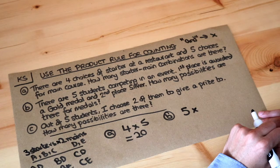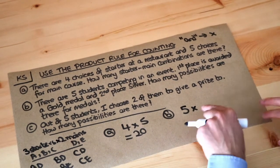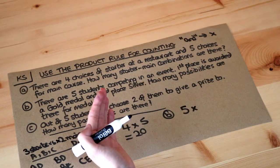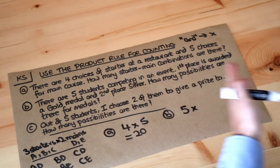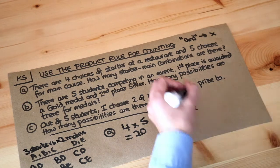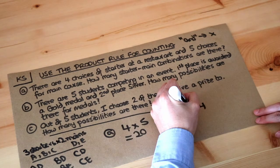So how many students can we choose for the silver medal? Well this is slightly more complicated. You might just think we times by five again, but we've already given the gold medal to one of the students and therefore there's only four students left where you can give them the silver medal. So we go times by four, so five times four, and in fact we get an answer of 20 again.